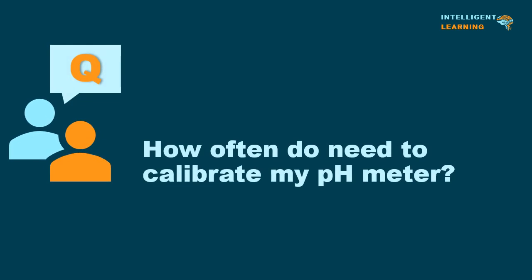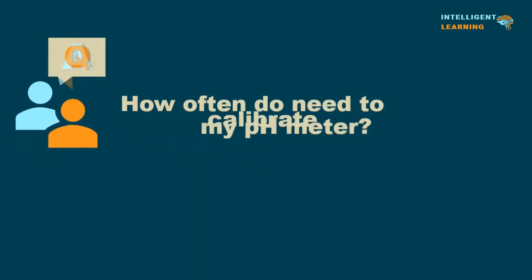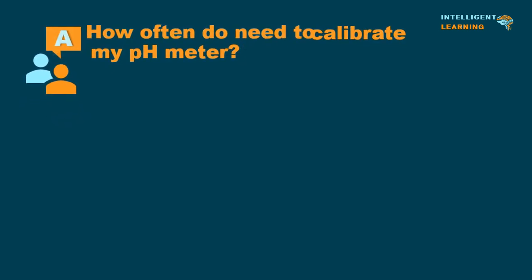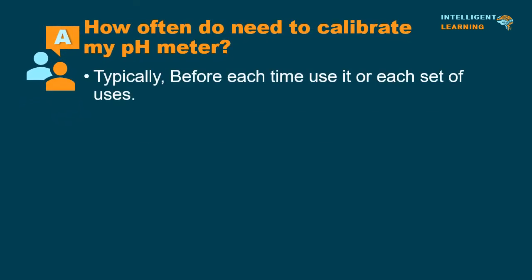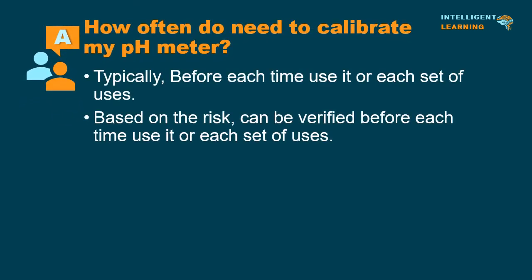How often do you need to calibrate the pH meter? Typically, before each use or each set of uses. Based on the risk, it can be verified before each use or each set of uses.